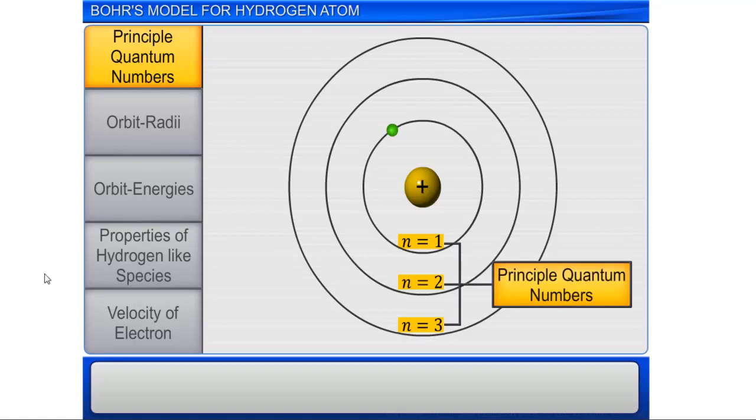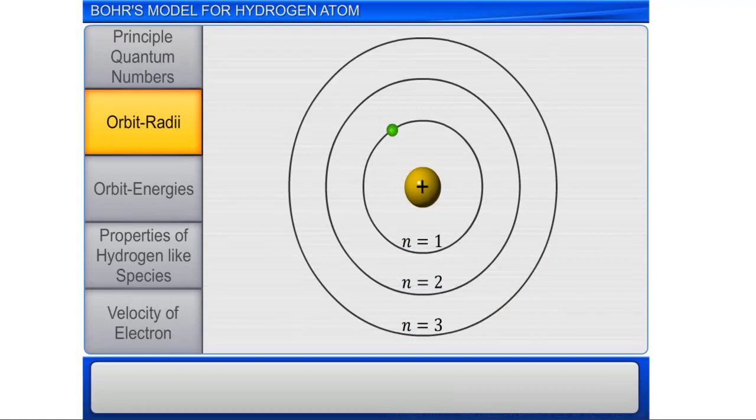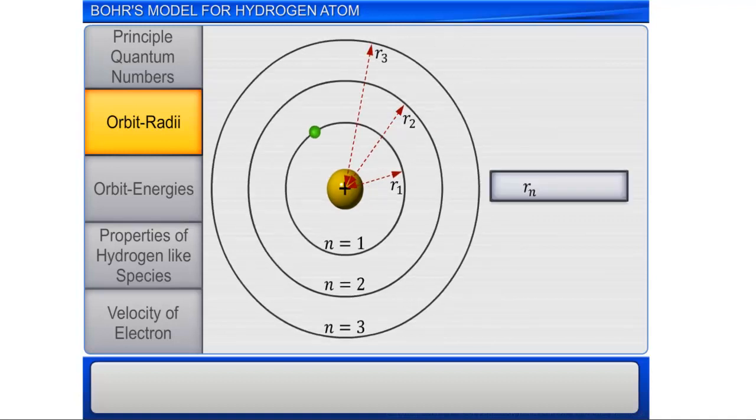The radii of stationary states, or orbits, can be given by the expression. Radius of the nth orbit, Rn, is equal to n squared multiplied by the constant A0, which is equal to 52.9 picometer.